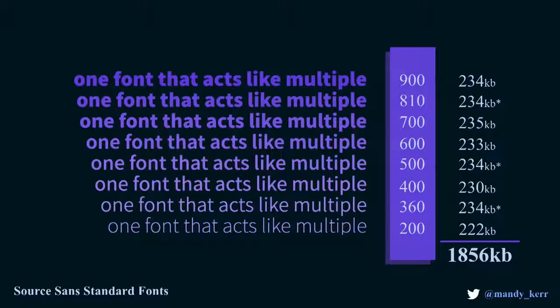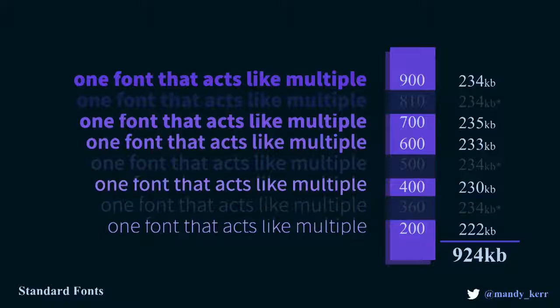If we were to compare this to the standard font weights we have with Source Sans in its standard format, they're about 234 kilobytes per file. With just these weights — none of the extras in between that the variable font has — that's about 1,856 kilobytes worth of fonts. If we get rid of the ones that don't exist, it's 924 kilobytes. That's nearly three times the size of the variable font, and you don't have as much flexibility or any of the additional weights that you had in the variable version.